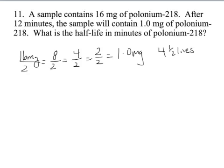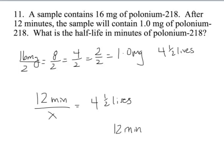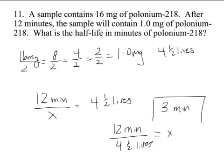We know the time that has elapsed to be twelve minutes. We don't know the half-life, that's what we're trying to solve, and we know that this is four half-lives. Rearranging, cross-multiplying, dividing, this rearranges to twelve minutes over four half-lives. It will be our x. Twelve divided by four. The answer is three minutes.